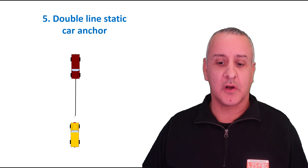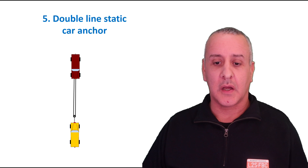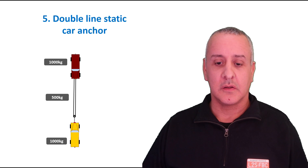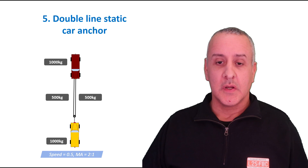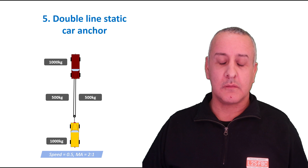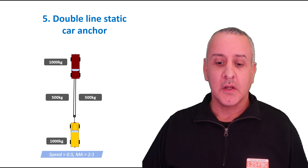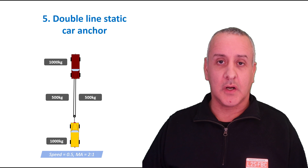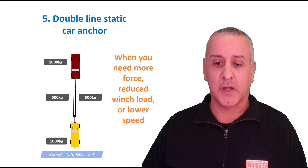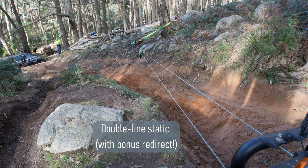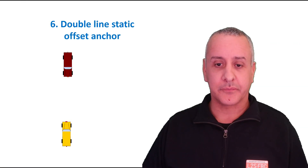Now we've got a double line static car anchor. There's the stuck vehicle and the recovering vehicle — we run a winch line out, it comes back straight to the other vehicle. There's a thousand kilograms on the stuck vehicle, a thousand on the winch vehicle, and 500 on each rope line. Because the stuck vehicle is suspended by two lines there's 500 in each, so we do have a mechanical advantage of two-to-one. Use this when you need more force, want to reduce your winch load, or want a lower speed.